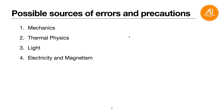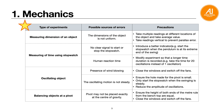There are four types of sources of errors and precautions: mechanics — meaning forces and moments — then thermal physics, light, and electricity and magnetism. Let's look at the first one.